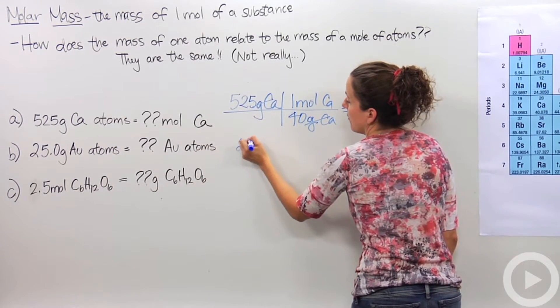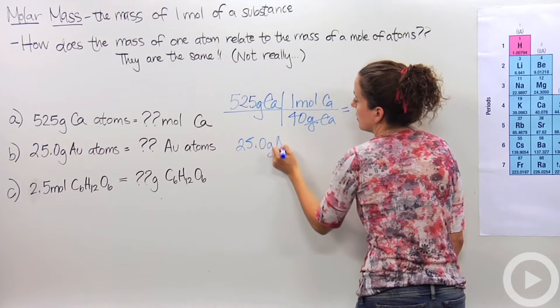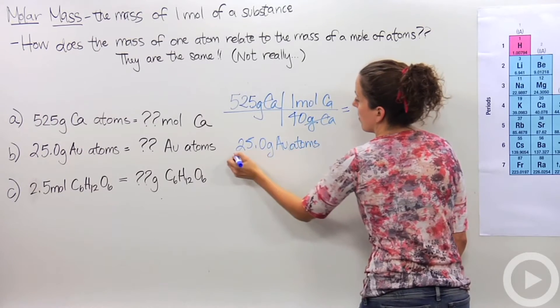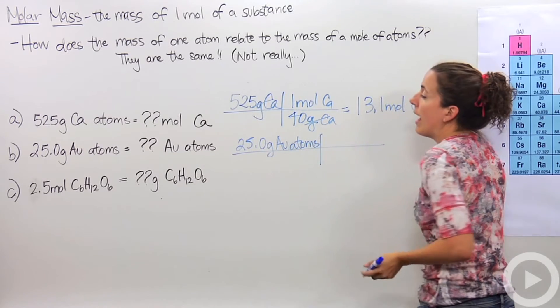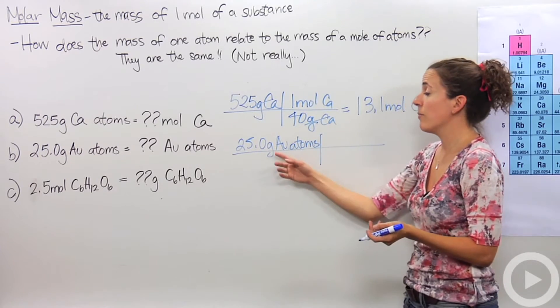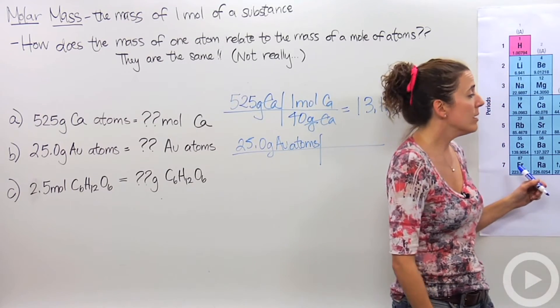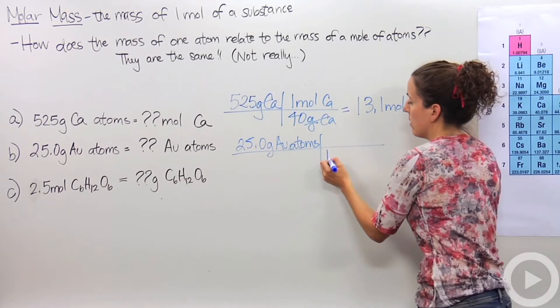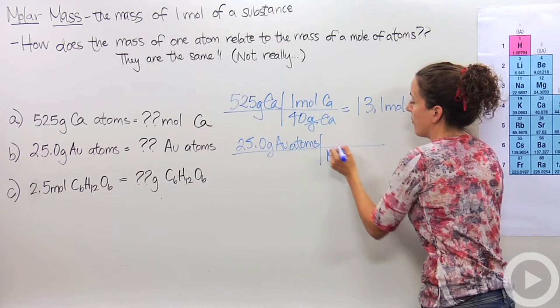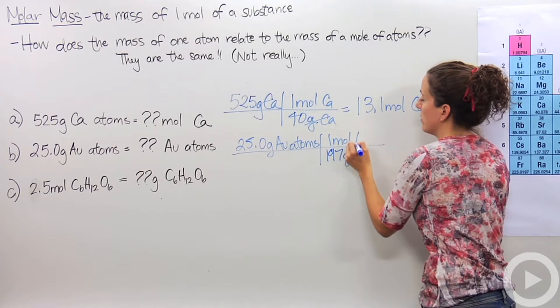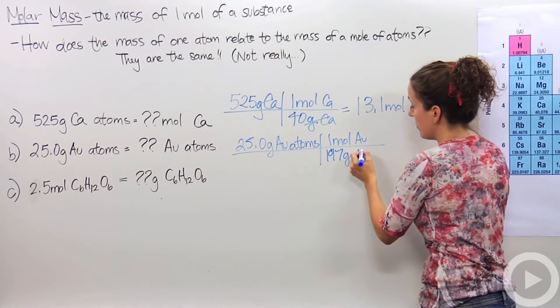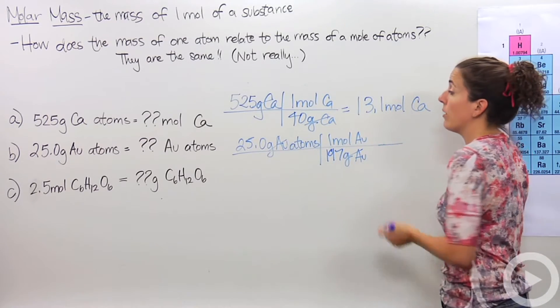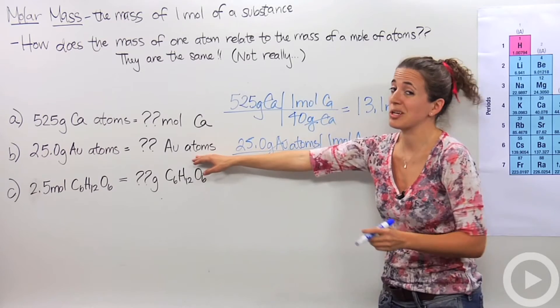Well, let's start with our given. We have 25.0 grams of gold atoms. How many atoms is that? Well, first we have to figure out the molar mass of gold. Let's look back at our periodic table. And we know that it's 196.9, approximately 197 grams for every one mole of gold. And I can cross this out. So 25 divided by 197, actually we're not quite done yet because this actually is in moles. We want to get to atoms, so we're not actually quite done.